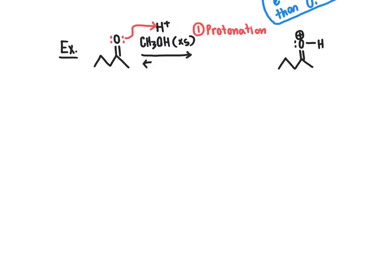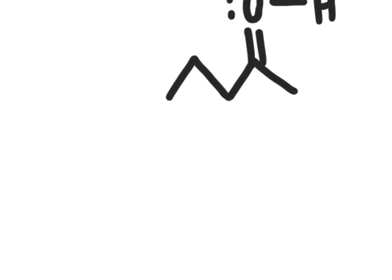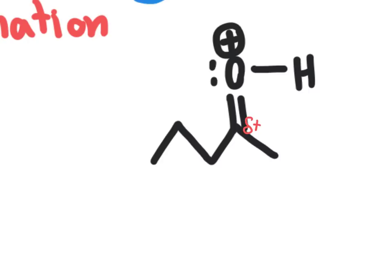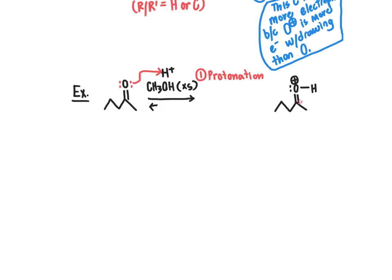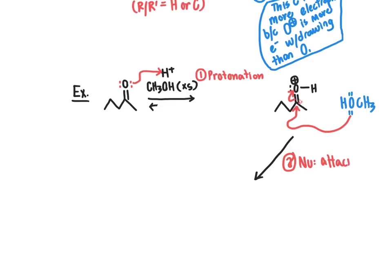With that very electrophilic carbon atom in place, we can now show it being attacked by a nucleophile. Looking at what's available in our reaction mixture, we have methanol, and methanol with its lone pair electrons on the oxygen is certainly suitable to act as the nucleophile. So we bring in our methanol molecule, use the lone pair of electrons from methanol to attack the electrophilic carbonyl carbon, and move the pi electrons out onto the oxygen so we don't violate the octet rule. This is step two — the nucleophile attacks the electrophilic carbonyl carbon.